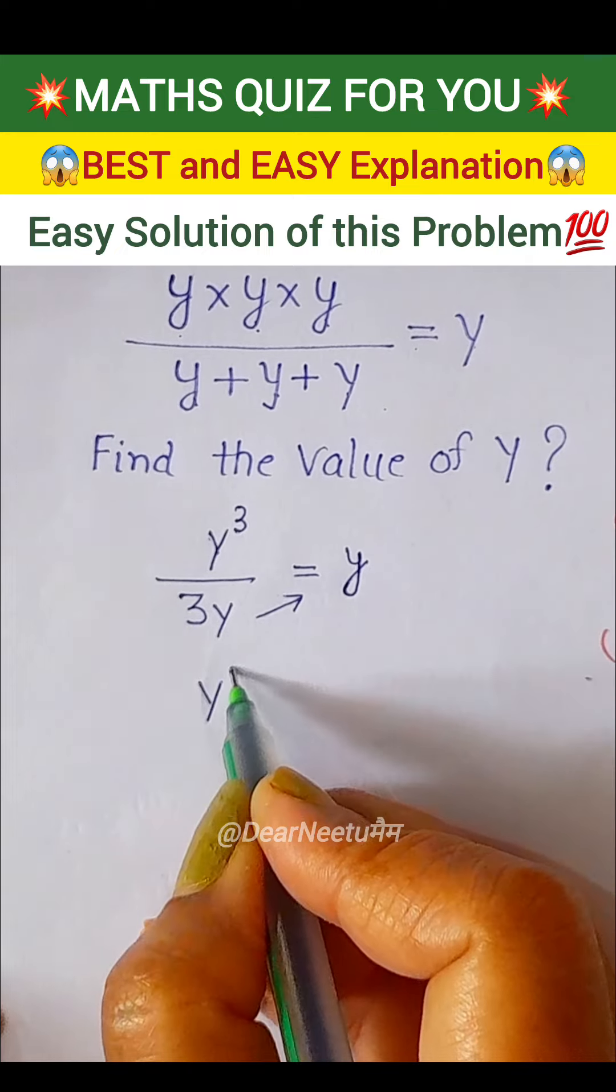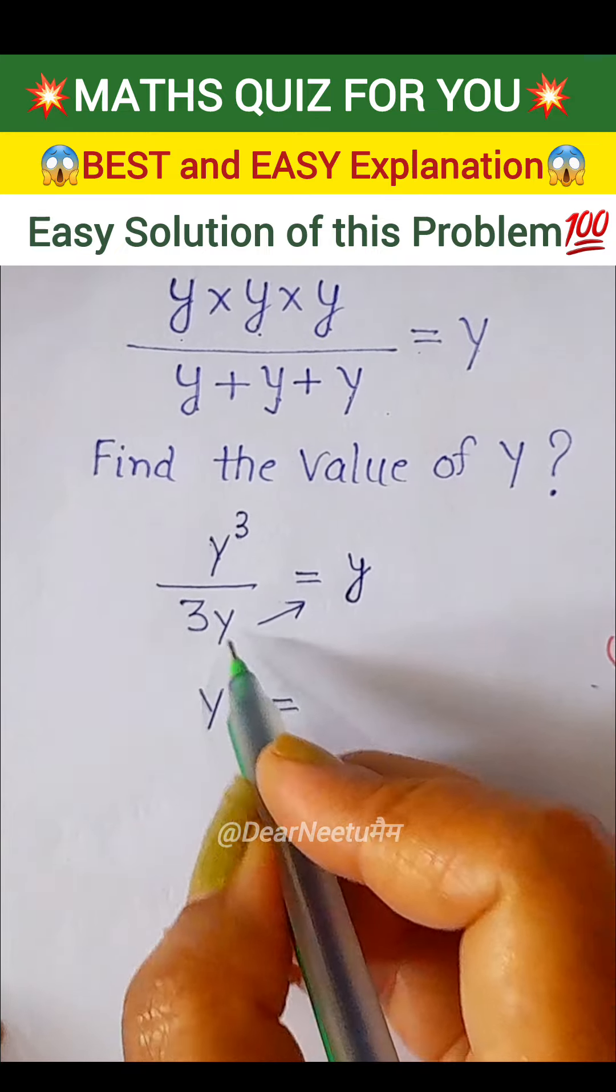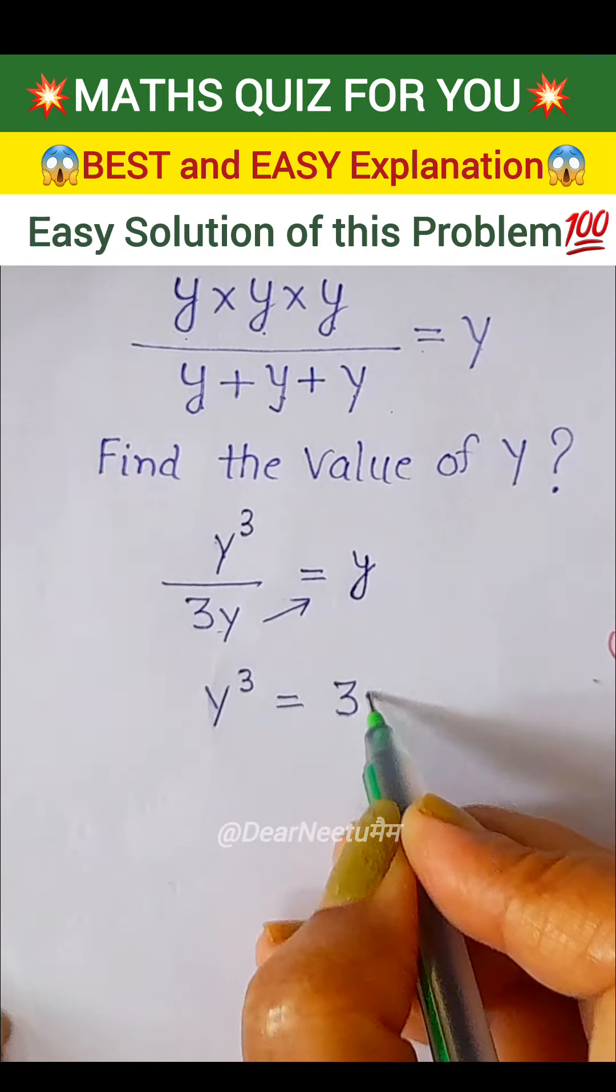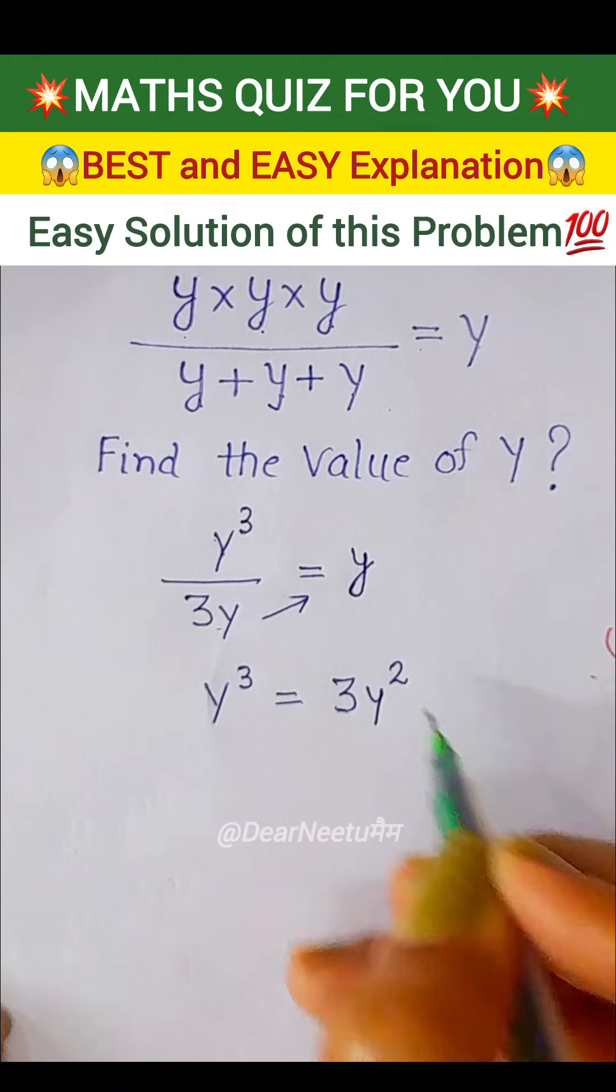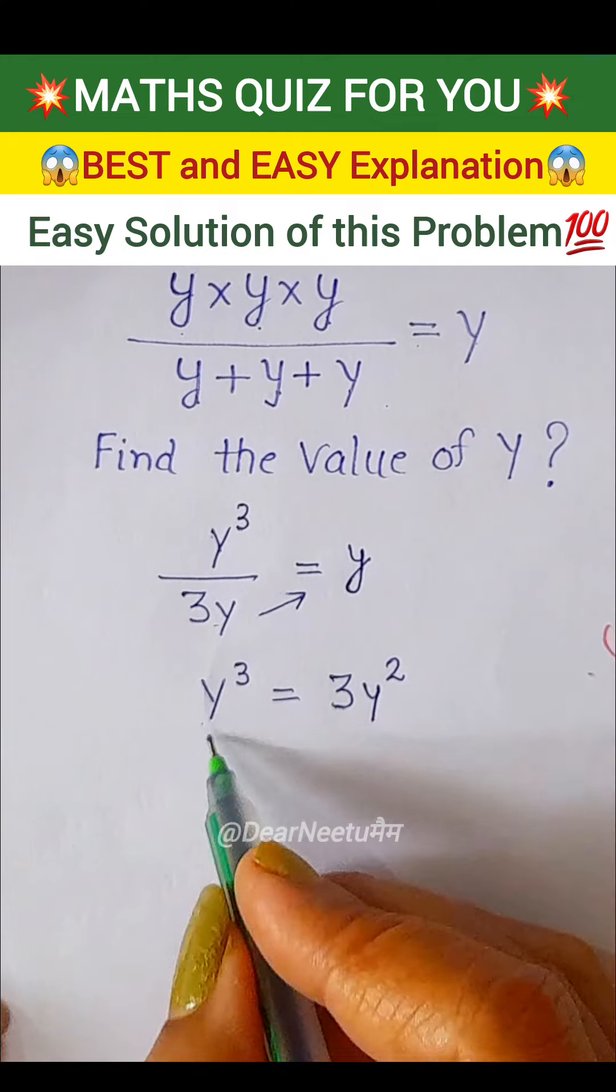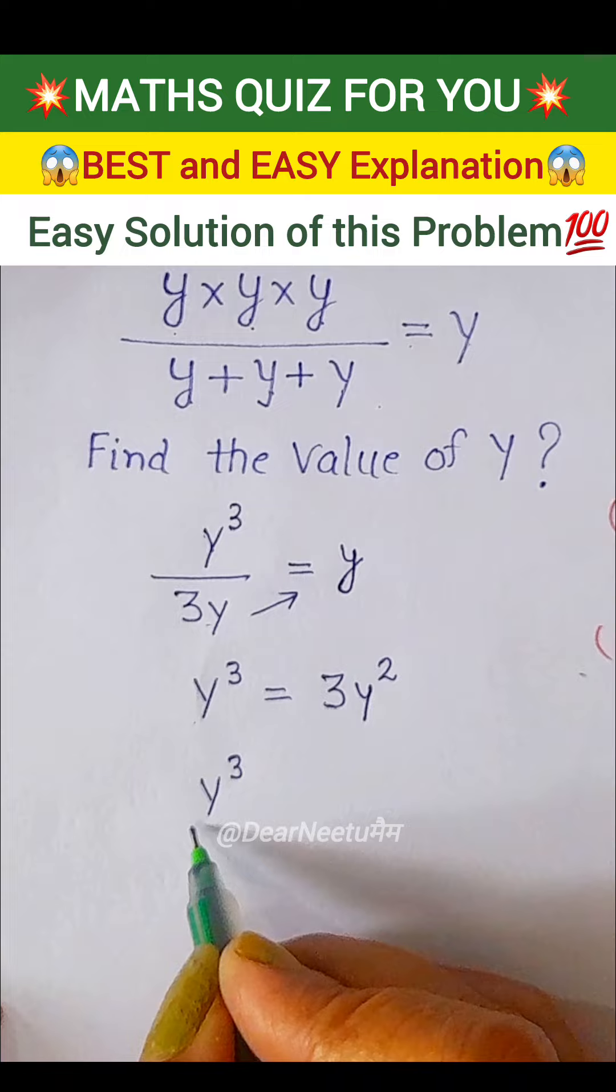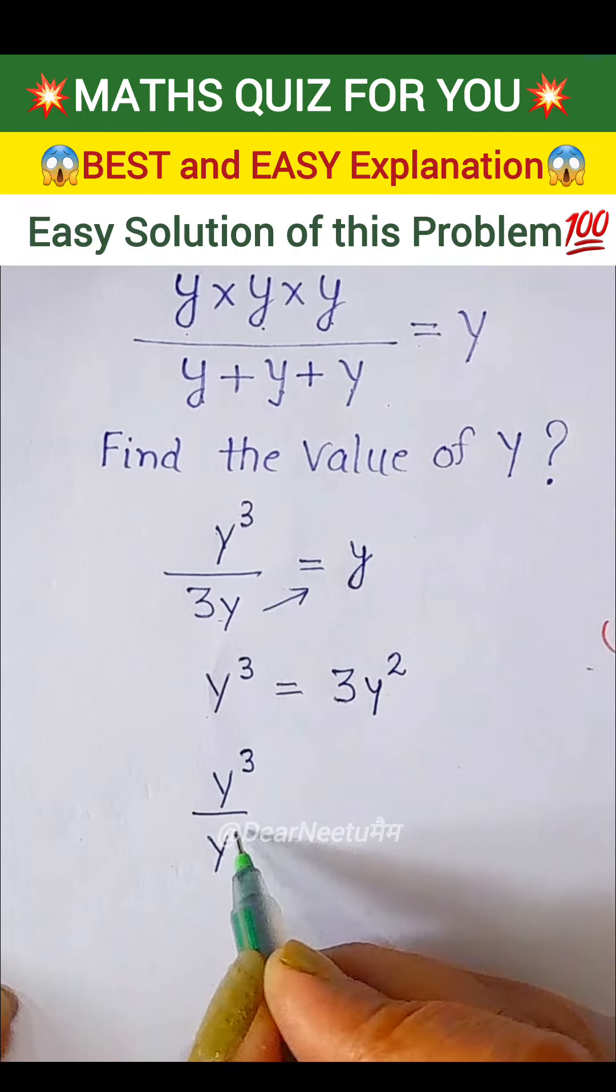We multiply it with y, this becomes 3y squared. This y squared comes here for division: y cubed upon y squared.